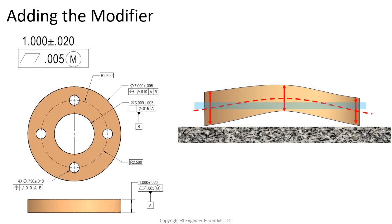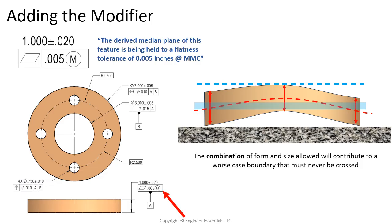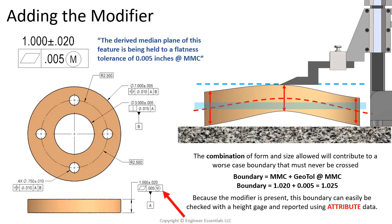For this next example, let's consider adding the maximum material condition modifier to the feature control frame. Now our example has the MMC modifier applied, which means the derived median plane is being held to a flatness tolerance of five thousandths when measured at MMC. The combination of form and size allowed contributes to a worst case boundary that must never be crossed — this boundary is calculated as the MMC plus the geometric tolerance when measured at MMC. In other words, our boundary from the granite surface up is 1.020 plus five thousandths, giving us a boundary of 1.025. Because the modifier is present, this boundary can easily be checked with a height gauge using attribute data — we simply report yes or no whether this feature fits underneath that boundary.